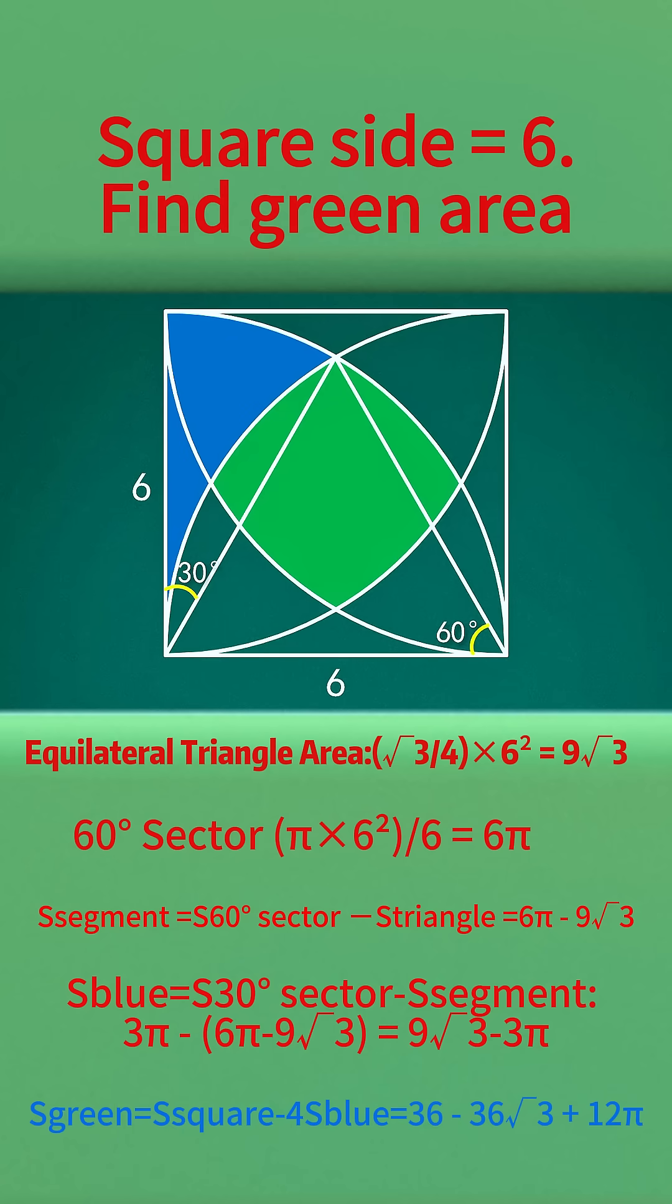Finally, subtract 4 times the blue area from the square area to get the green area.